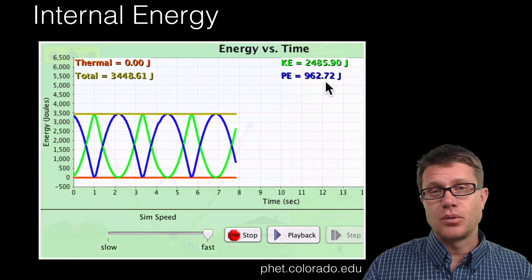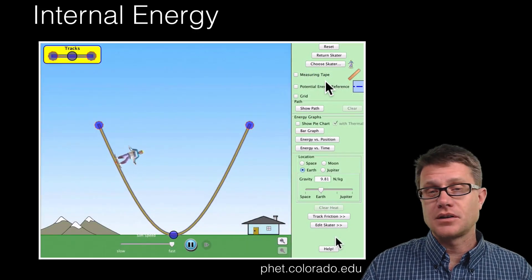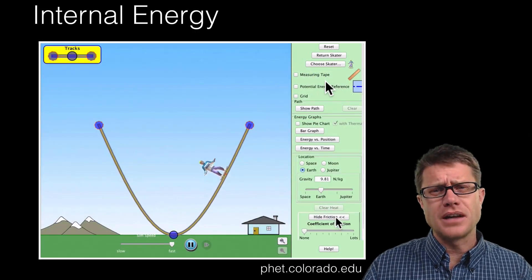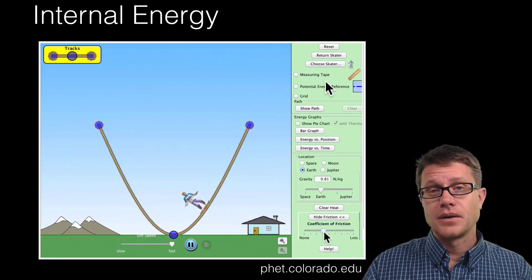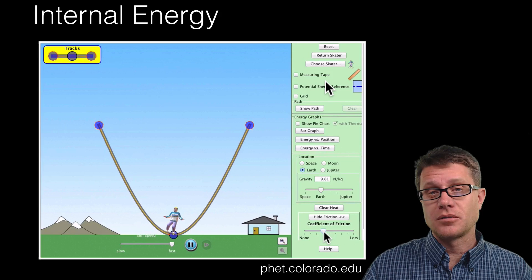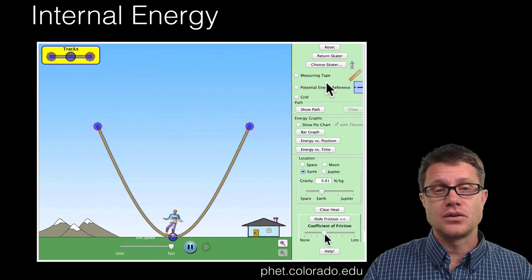If you watch the skateboarder, he will just keep going forever. You know that is not how nature works. What we can do is we can increase the coefficient of friction. Now we are converting some of that energy into thermal energy. And then he quickly comes to rest.